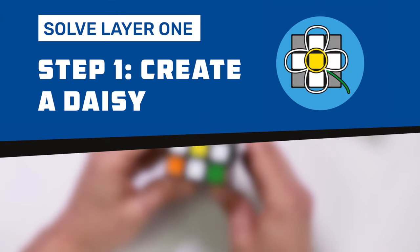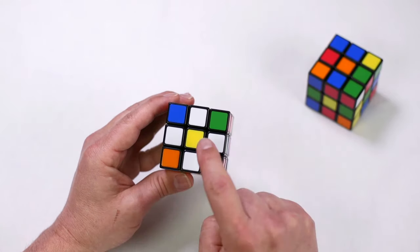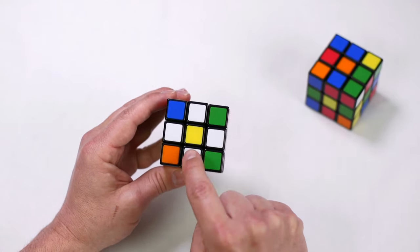Solve layer one. Step one, the daisy. This is where we want to get to by the end of this stage: a yellow center piece with four white edge pieces.